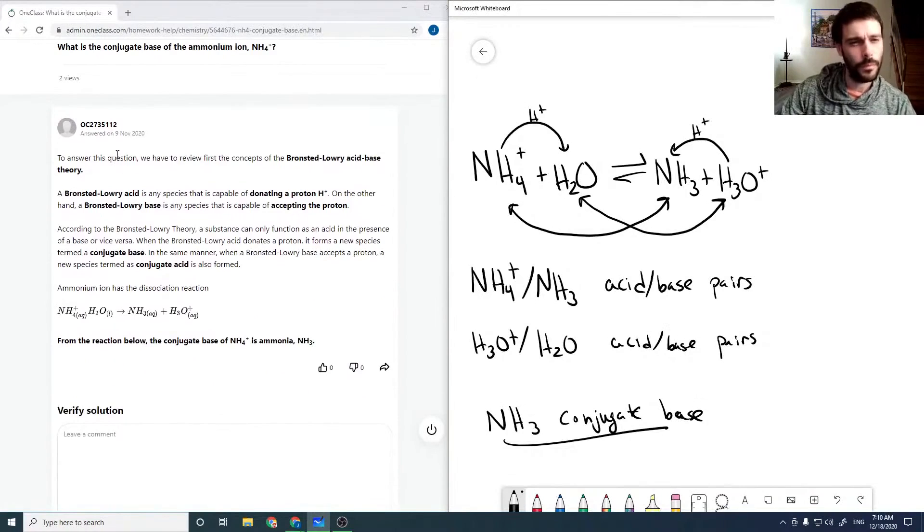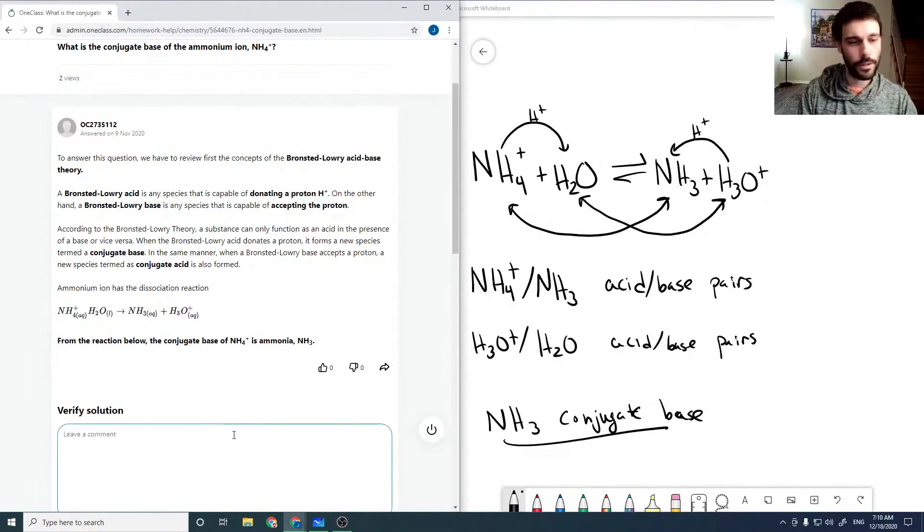Looking at the solution, an acid is any species capable of donating a proton, and a base is one capable of accepting said proton. If we look at the reaction, we can see that ammonia NH3 is our conjugate base. That looks good.